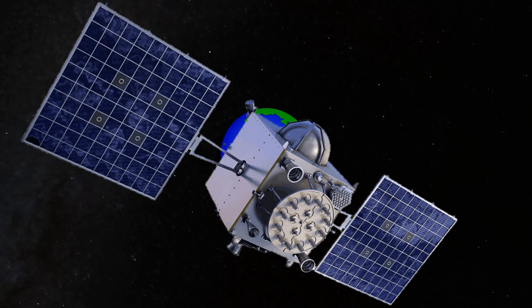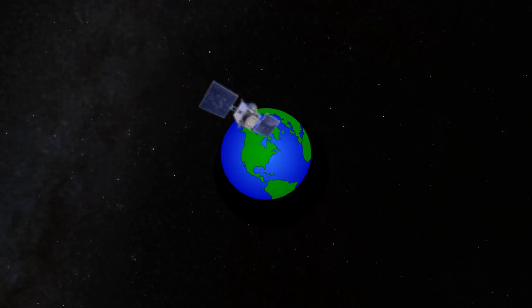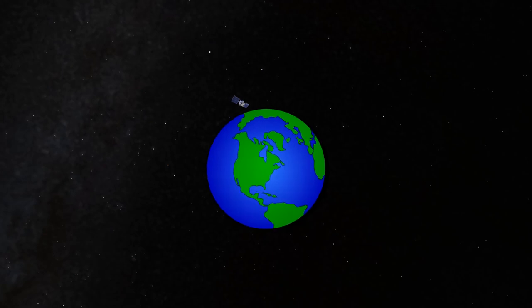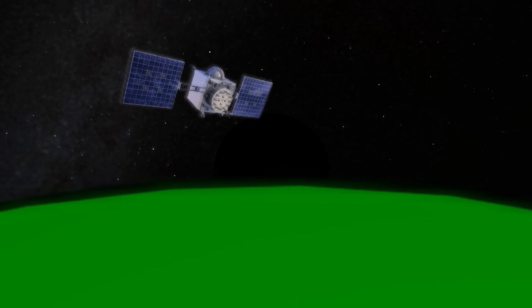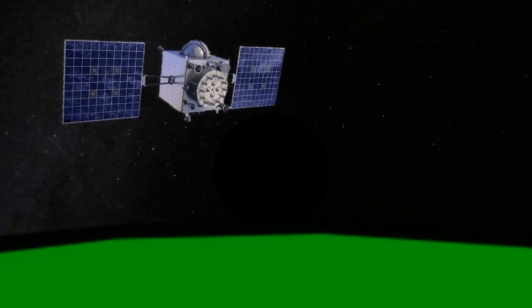GPS is a revolution in navigation for aviation and many other everyday uses. Satellites in space send signals to receivers on the ground, allowing our precise position on the Earth to be determined.